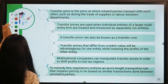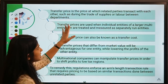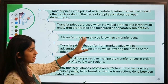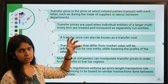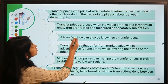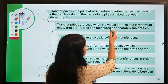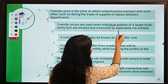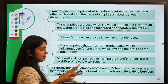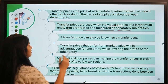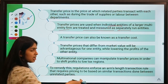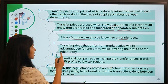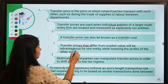Transfer price is the price at which related parties transact with each other. Transfer prices are used when individual entities of a larger multi-entity firm are treated and measured as separately run entities — as if they share no relationship. Transfer price can also be known as a transfer cost, and transfer prices that differ from market value will be advantageous for one while lowering the profits of the other entity.